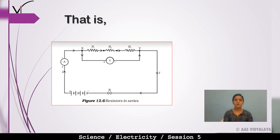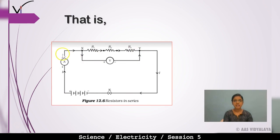In series, you can see that R1, R2, R3 — three resistors — are connected end-to-end. This is our battery source, this is our ammeter, this is our key, and this is our voltmeter. In this electric circuit we have three resistances R1, R2, R3 connected end-to-end — that is our series combination.